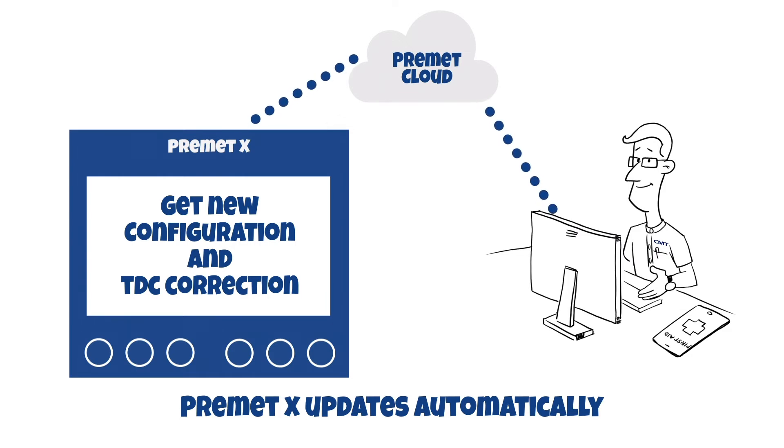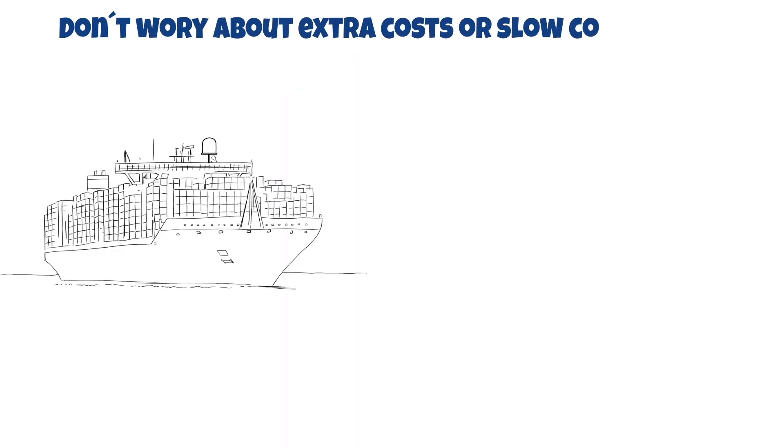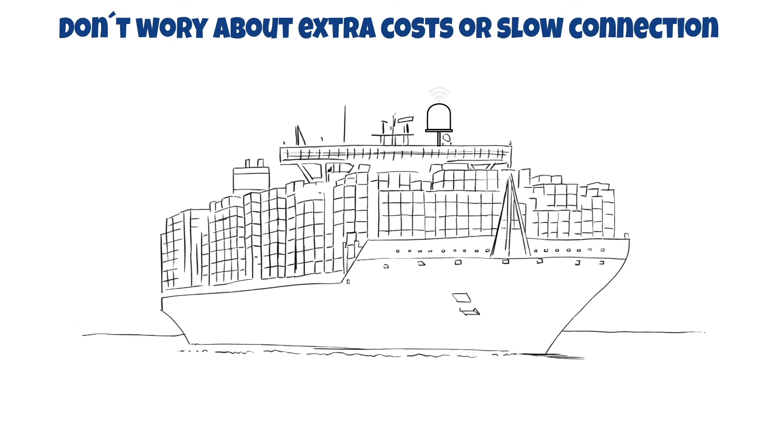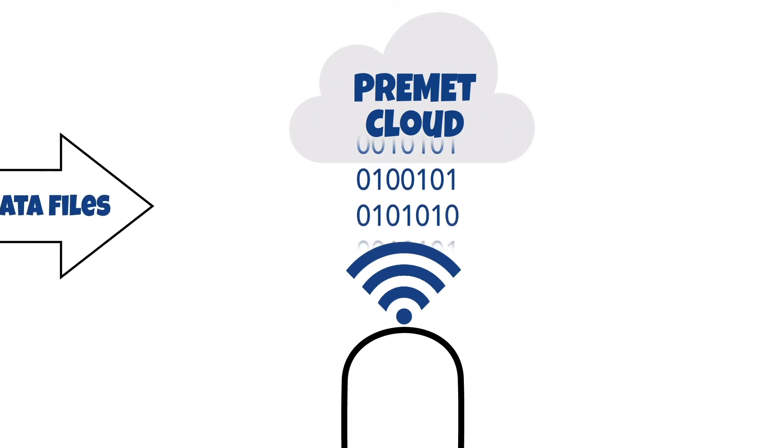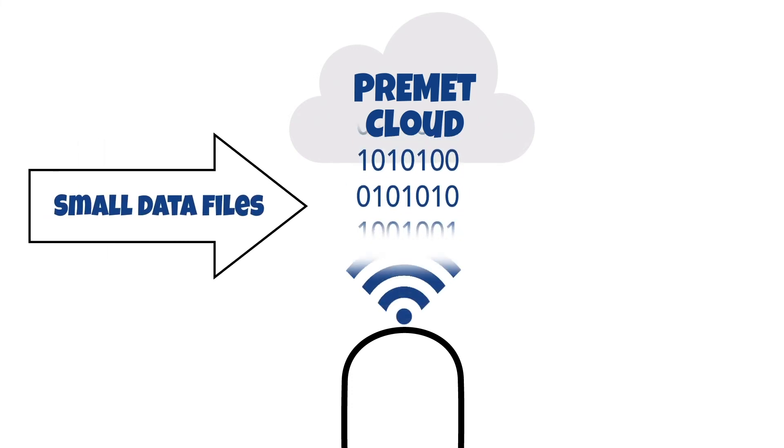When uploading new measurements, your Primit X will check for new configurations or software. If available, it will be downloaded to your device. The file sizes are reduced to an absolute minimum. Only new and necessary information are exchanged.